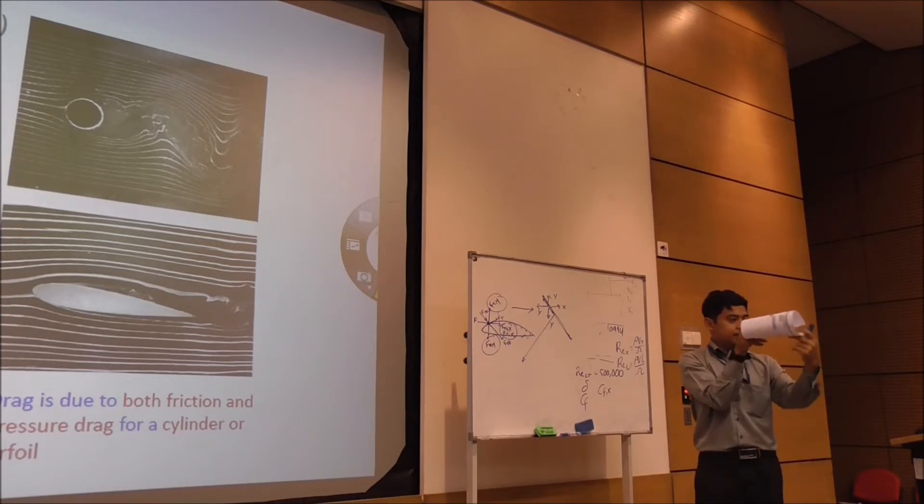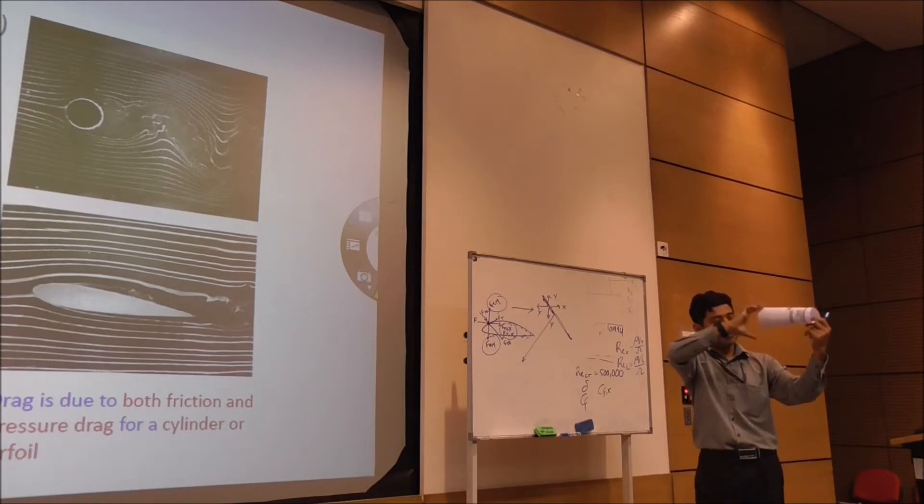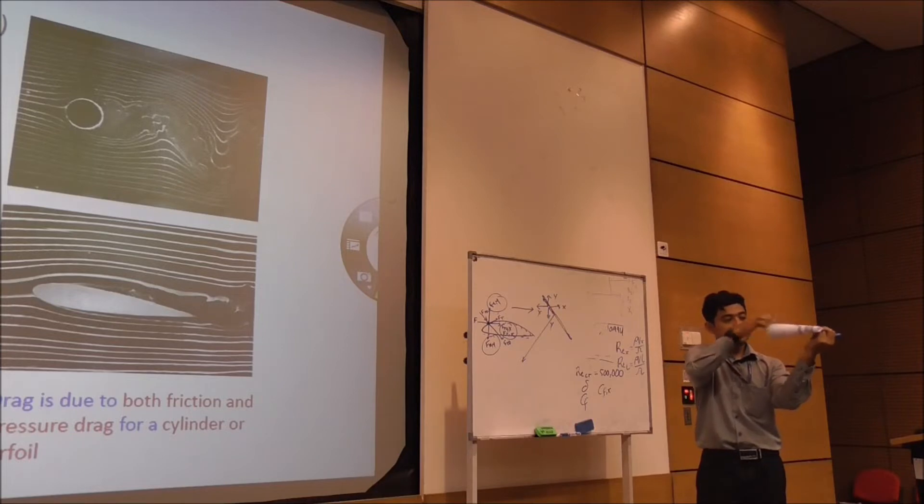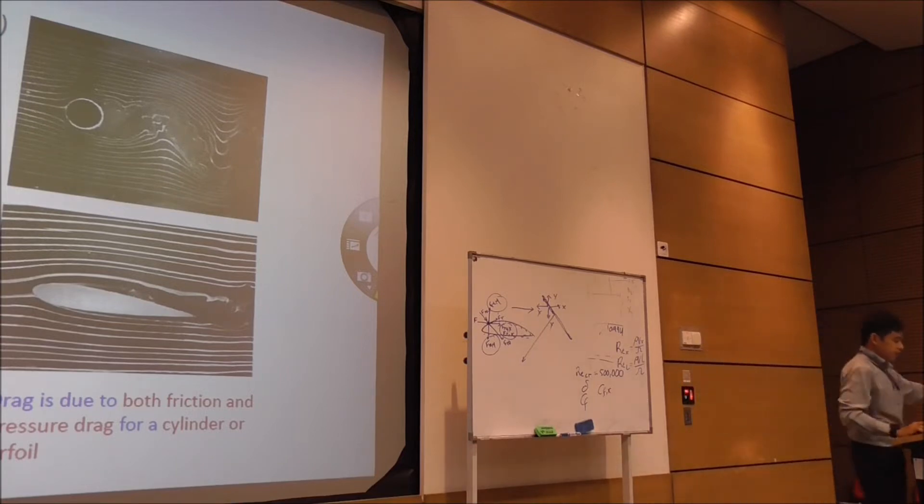Now, if you want to reduce the drag force due to pressure, you squeeze it. When you squeeze it, you minimize the frontal area but you increase the top area, which means now you increase the shear friction. Shear friction will increase, but the drag due to pressure will decrease. That's why you find that the aircraft is following this shape, and all your sports cars are following this shape.